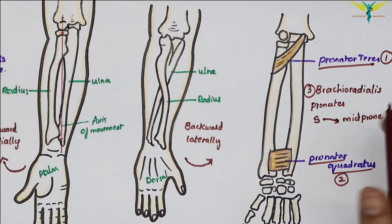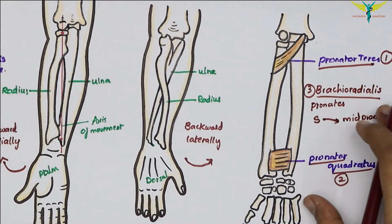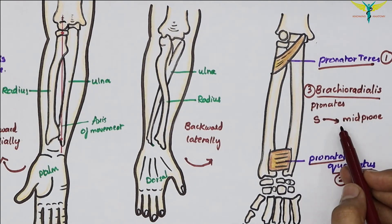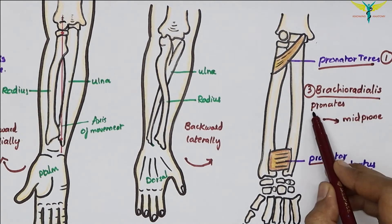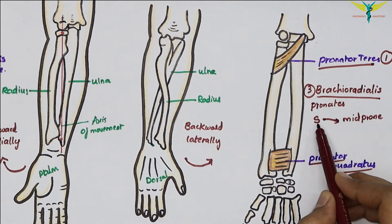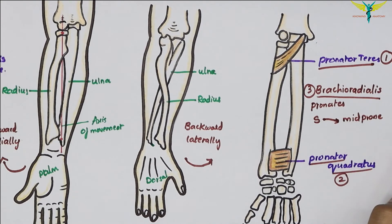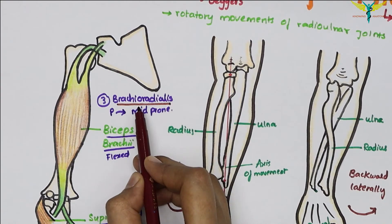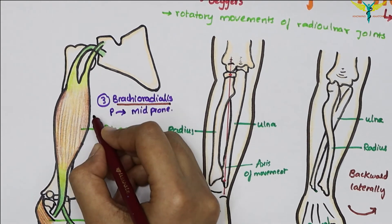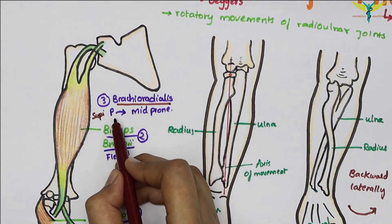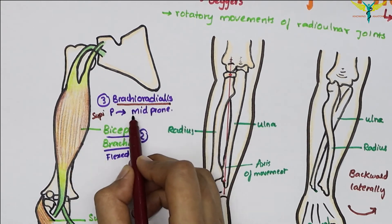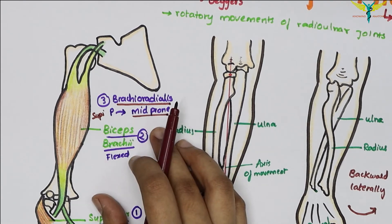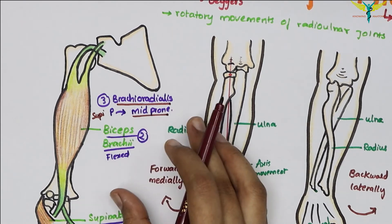Remember, the brachioradialis muscle acts as both a pronator and a supinator. In pronation, it pronates the supinated forearm to the mid-prone position. In supination, it supinates the pronated forearm to the mid-prone position. So brachioradialis functions in both movements.